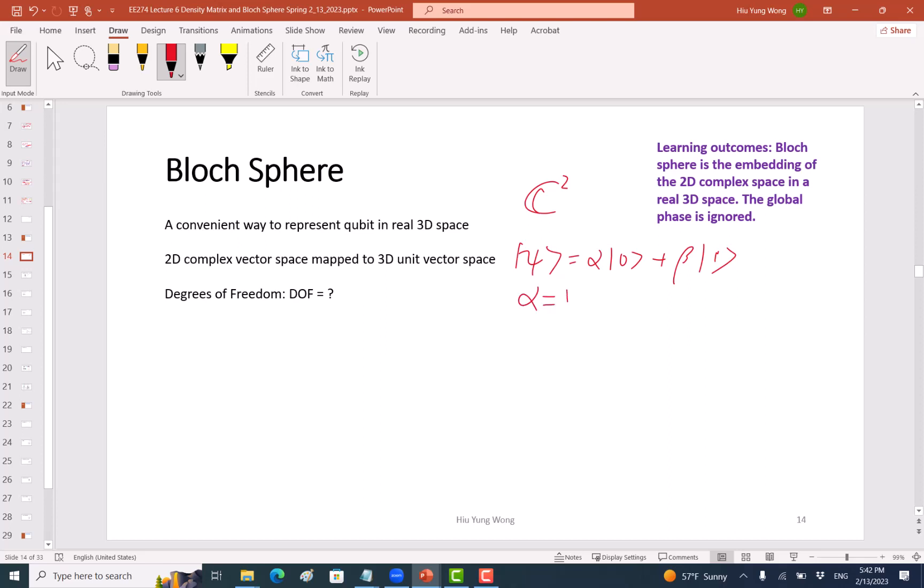Alpha is actually equal to alpha magnitude times e to the power I delta alpha. Beta is equal to the magnitude of beta times e to the power I delta beta. Just a complex plane. This is alpha, and this is delta alpha on the complex plane.